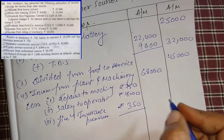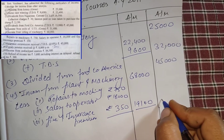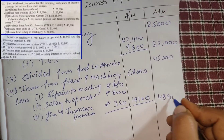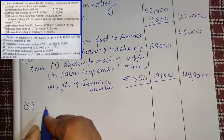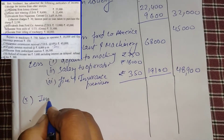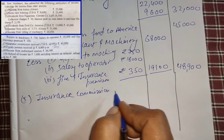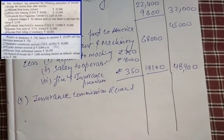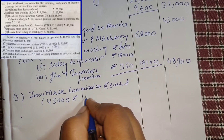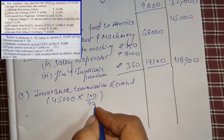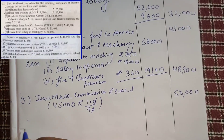We will write 3,500. We will write the gross value. If TDS is 10%, then we take 100 upon 90 to gross up. The gross value will be 50,000.